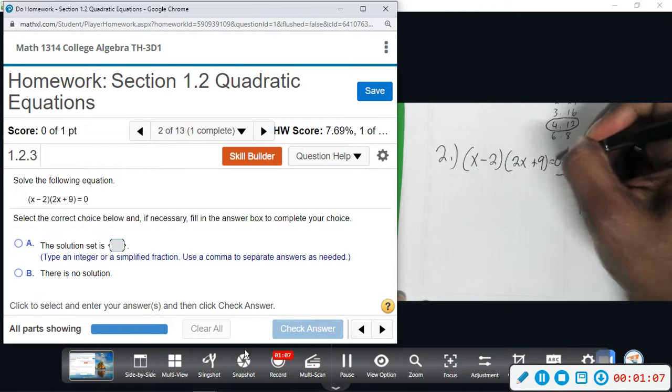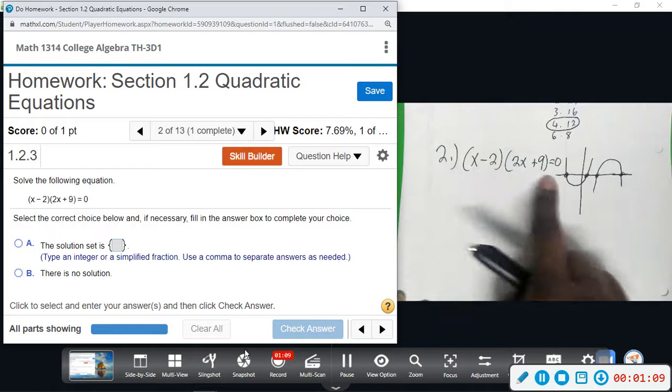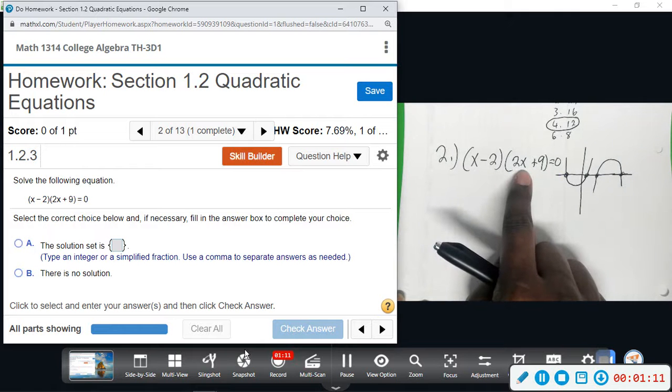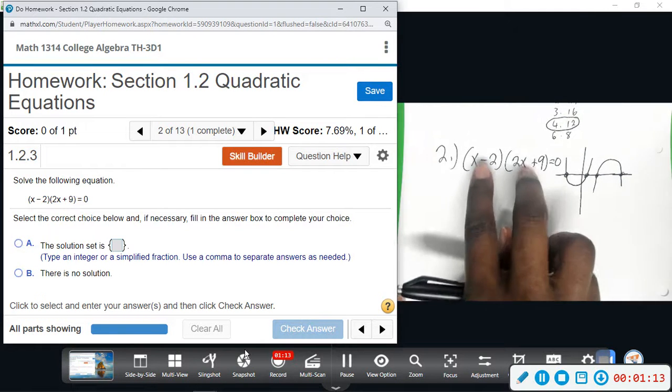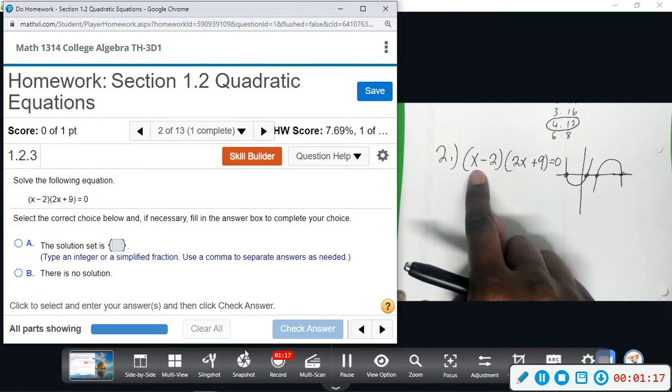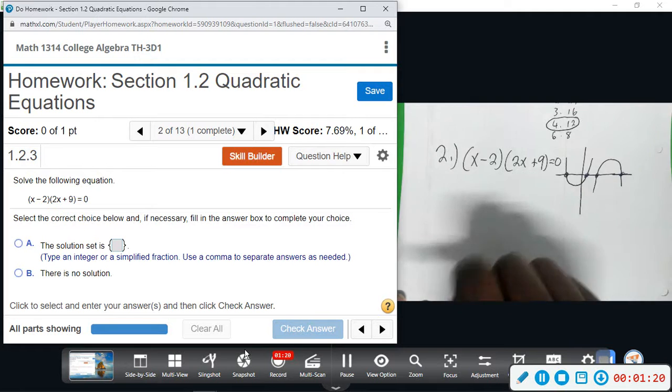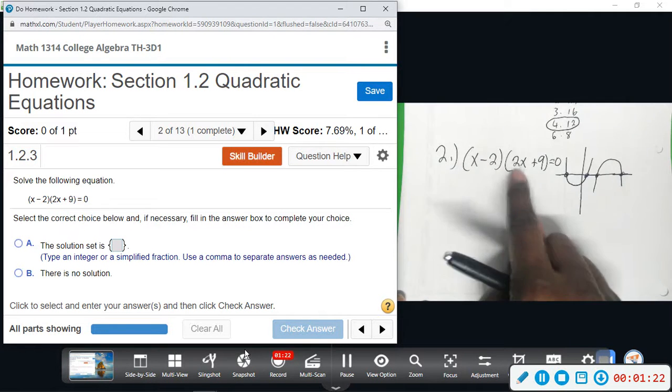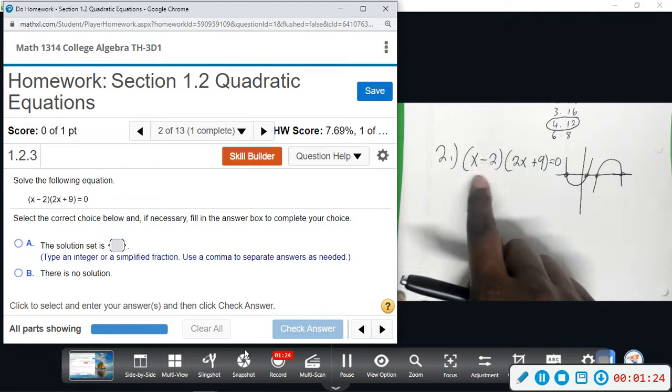So in order for this expression to equal zero, notice that we're multiplying these two things. Either this expression has to equal zero, or this could equal zero. They both could equal zero because zero times zero is zero, but all we need is one. So we're going to try to find out what makes each of them zero, and that will give us our two answers.